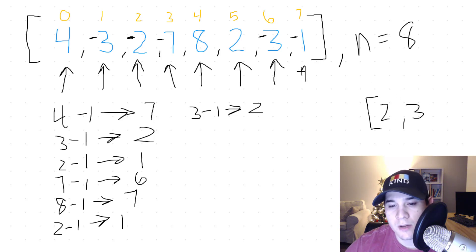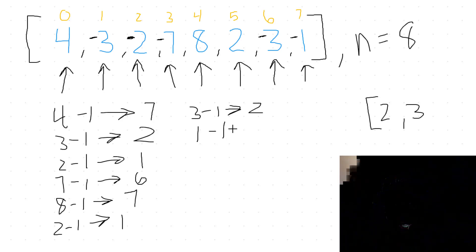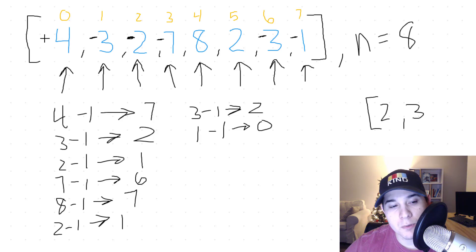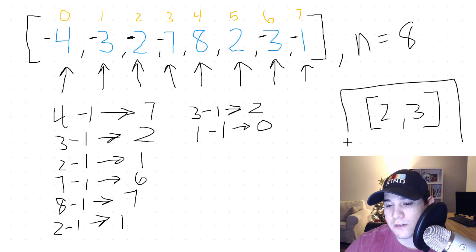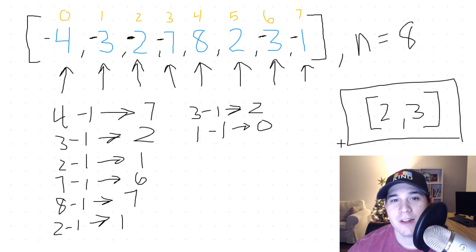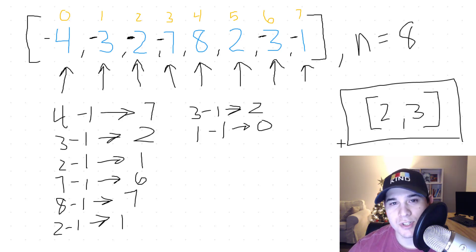Then we iterate one more time. The absolute value of negative one minus one is index zero. We check index zero — that's a positive number, so we just flip the sign and then we're finished iterating. So two and three would be our duplicates. That is how you solve this problem without using extra space. It's definitely a tricky solution to come up with, but that's probably why they ask you to do it — the set solution is fairly simple, so they want to throw curveballs.